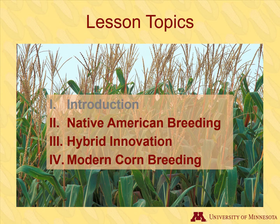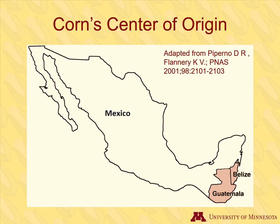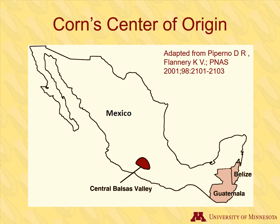Corn had a long history of breeding thousands of years before Columbus arrived in the New World. Let's look at the very beginning of corn development, before corn was actually corn. We will start the section on Native American breeding by discussing corn's wild ancestors and where corn originated. The center of origin is the geographical area where a crop was domesticated. For corn, the center of origin is in the Balsas Valley area in Mexico.